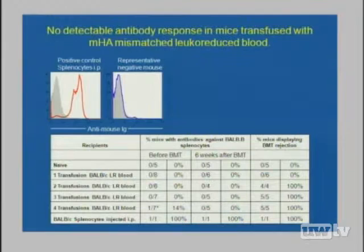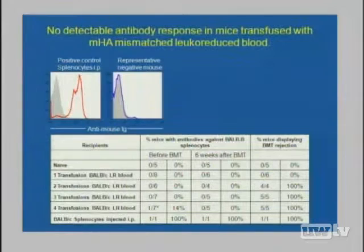Getting into mechanisms of rejection: as blood bankers we are drawn immediately to serological explanations. Using indirect immunofluorescence assays, we have a fairly sensitive measure of anti-MHC or anti-allogeneic antibodies, and with the exception of one very special mouse we never detected antibodies in any of these animals that rejected their bone marrow transplant, either before or after the transplant. Absence of evidence is not evidence of absence, but we could not detect them.